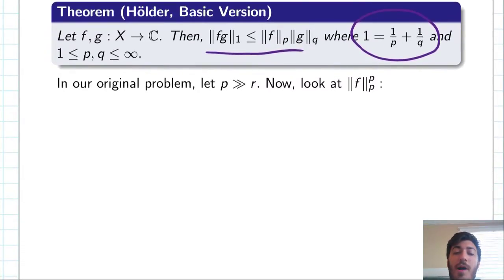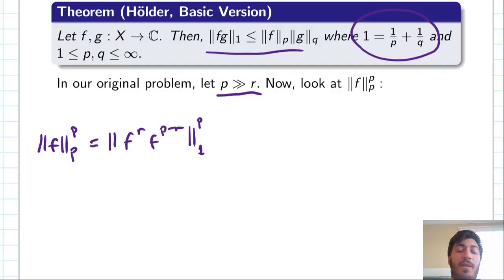So, in our original problem, we have f as an L^r function. But we really only care about the behavior of p as it gets really large, namely the asymptotic behavior. So, let's just pretend p is much larger than r, just for our convenience. And let's take a look at the hint I left myself, which is to look at the p norm of f raised to the pth power. So, let's rewrite this maybe in terms of r a little bit. So, we get f^r, f^(p minus r), and then it's just the one norm raised to the pth power.